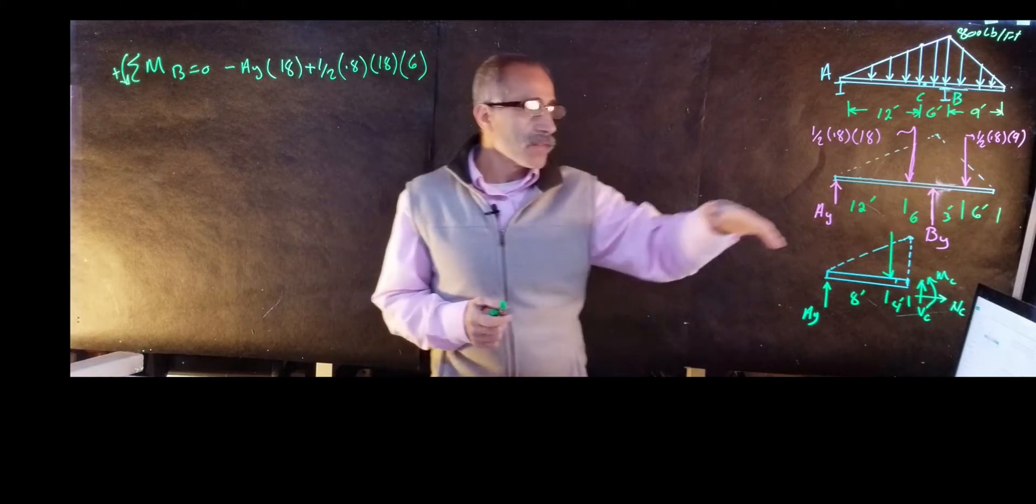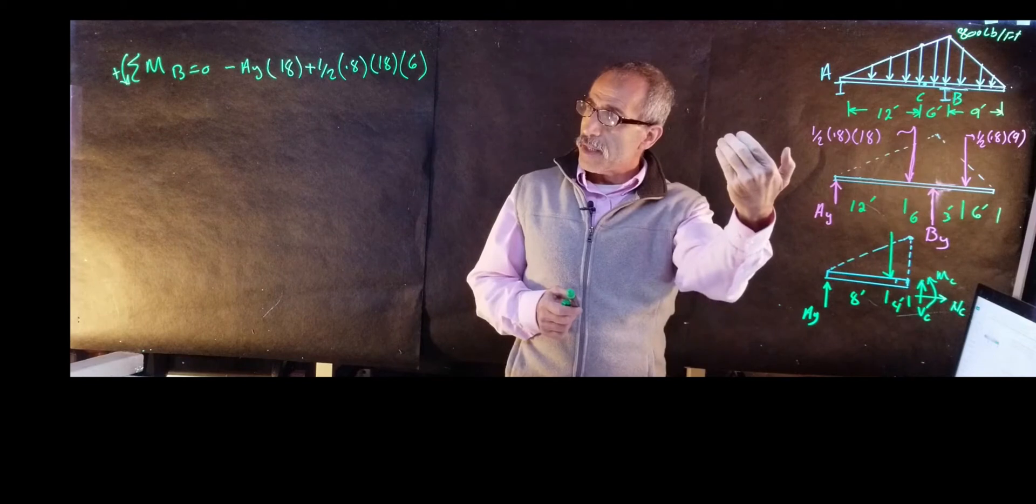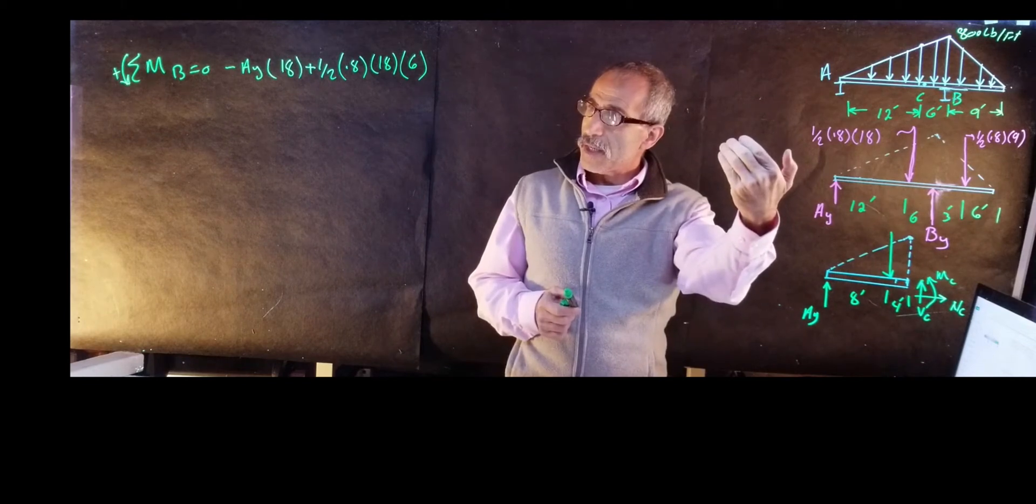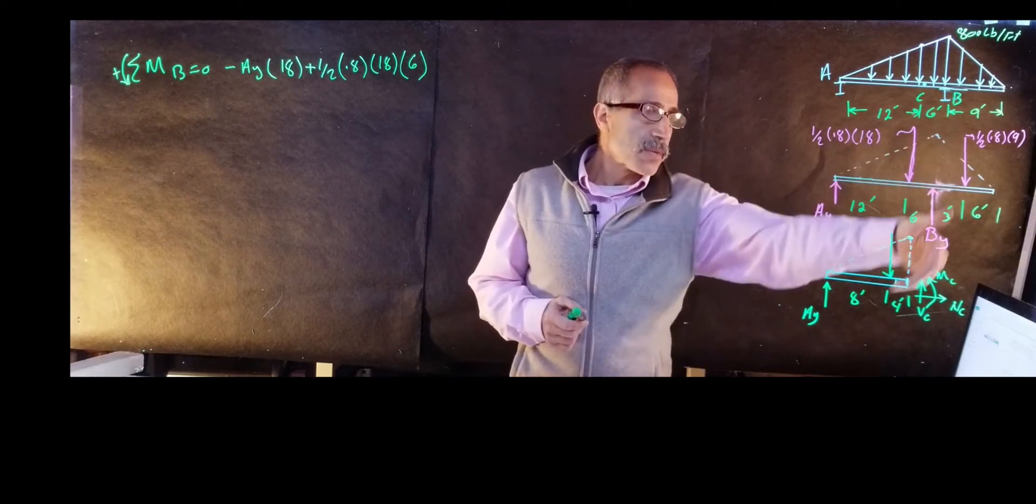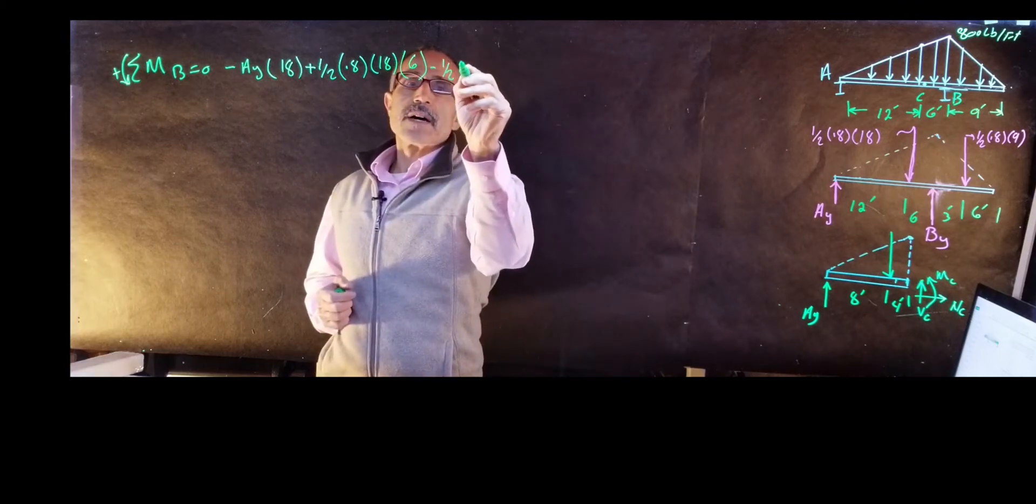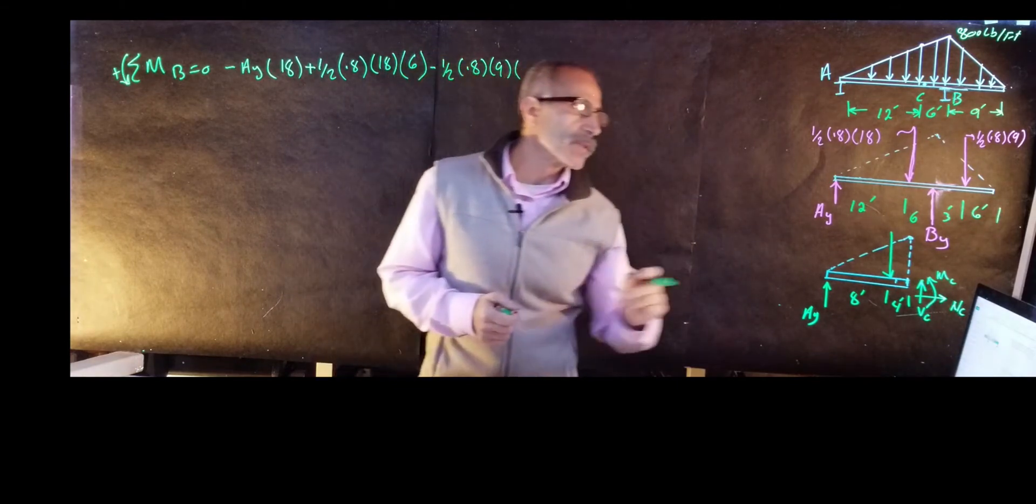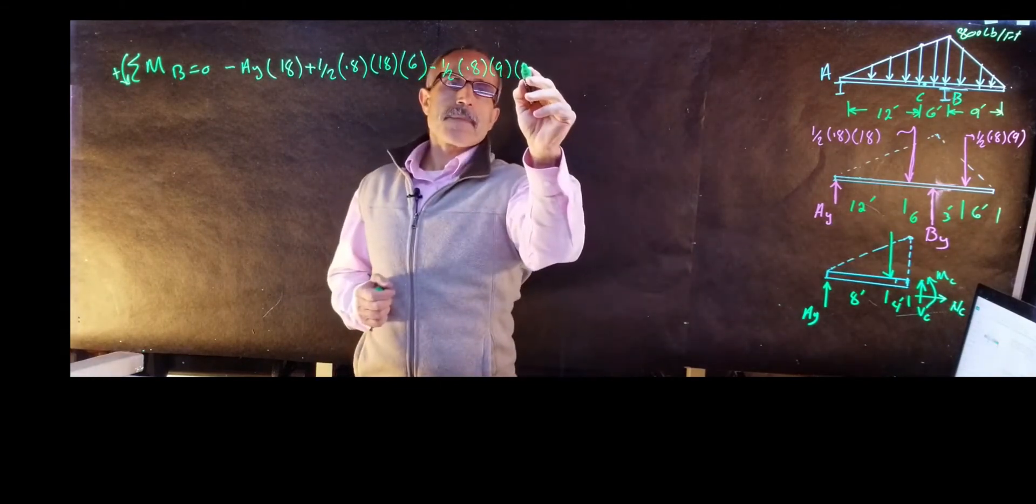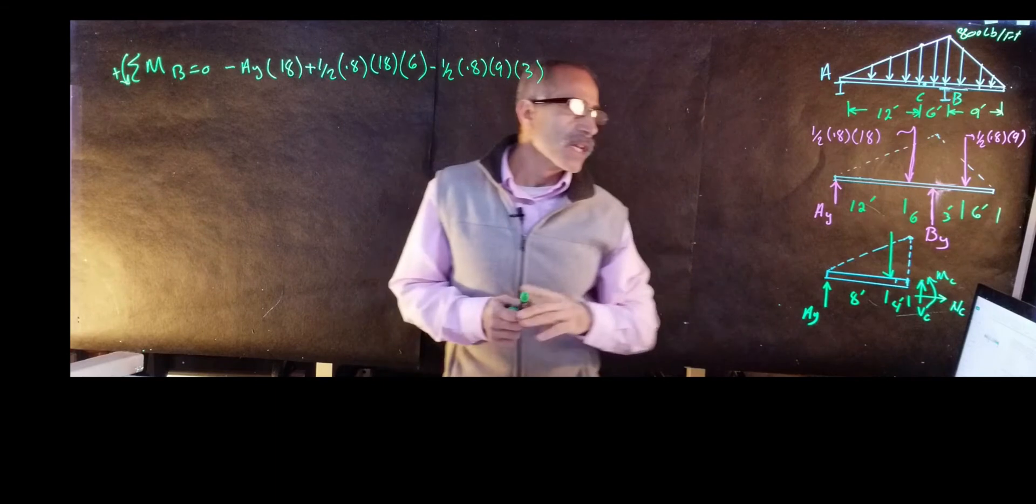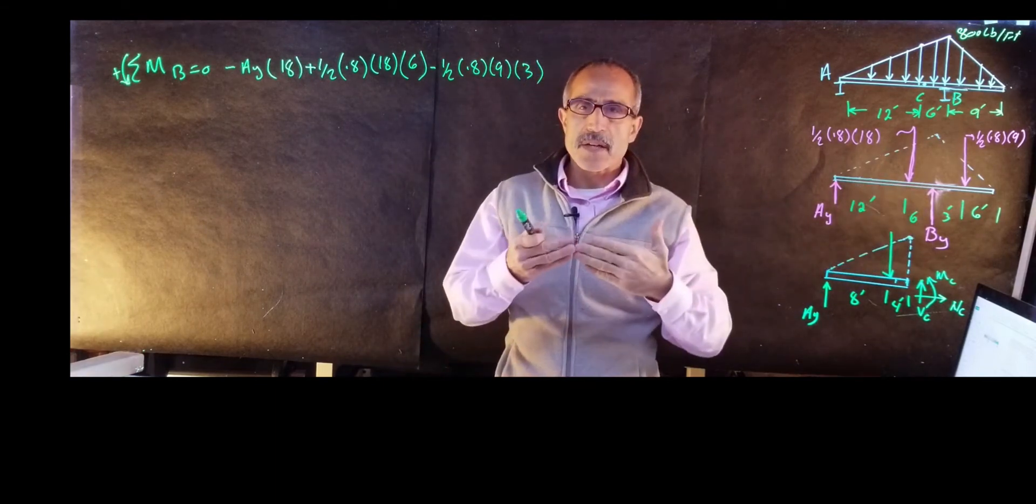Then on the other end, I have this other force I've got to deal with. So that's going to come out again negative because the rotation comes back this way. So I'm going to have minus one-half of 0.8 times 9, and the distance from there to B is 3 feet. B cannot take a moment about point B because it's right on top of it.